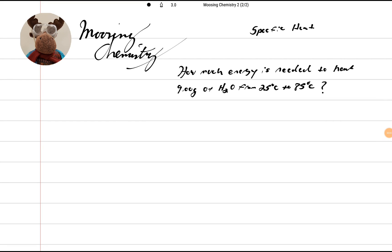Hi, welcome back to Moosin Chemistry. This is a specific heat problem. How much energy is needed to have 9 grams of water go from 25 degrees Celsius to 85 degrees Celsius?